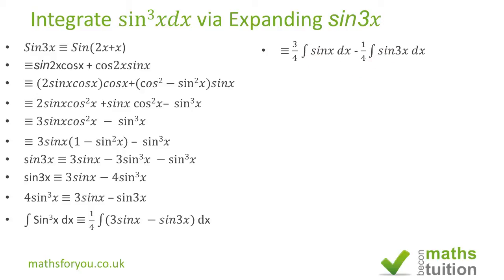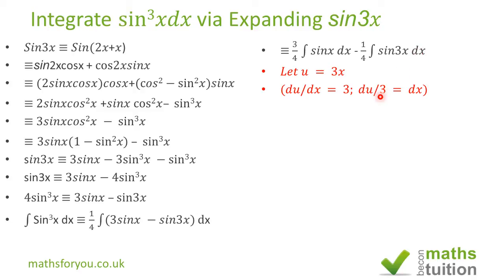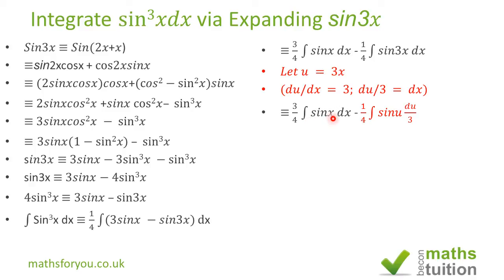For the second term, let u equal 3x, so du/dx equals 3, which makes dx equal to du over 3. We replace dx by du over 3 and replace sin 3x by sin u. So we end up with three-quarters sin x dx minus one-quarter sin u times du over 3. Because 3 times 4 gives us 12, we get one-twelfth.